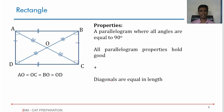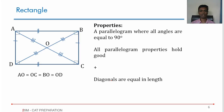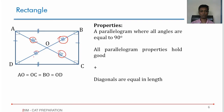A rectangle is a parallelogram where all angles are 90°. If one angle is 90°, all angles should be 90°. Everything that holds good for a parallelogram will hold good for a rectangle — adjacent angles supplementary, opposite angles equal, all angles are 90°, opposite sides parallel and equal. On top of all of this, the diagonals of a rectangle will be equal in length. AO equals OC because of the parallelogram property, so AC equals BD, meaning AO equals BO equals CO equals OD.